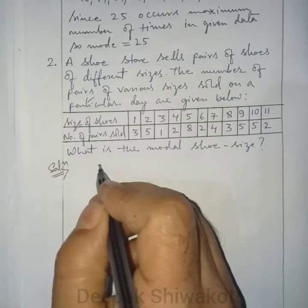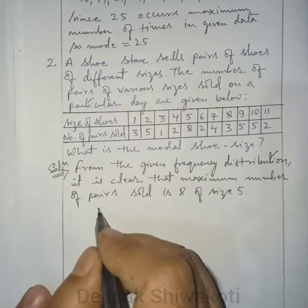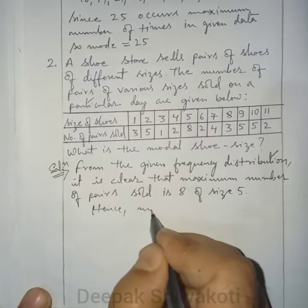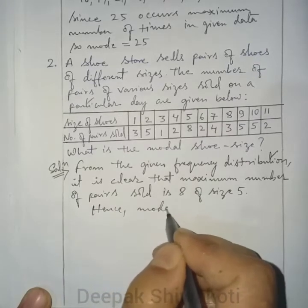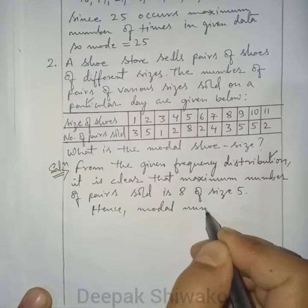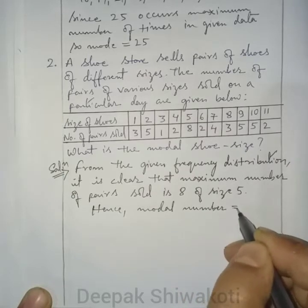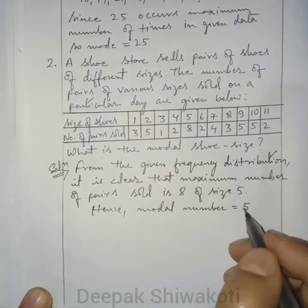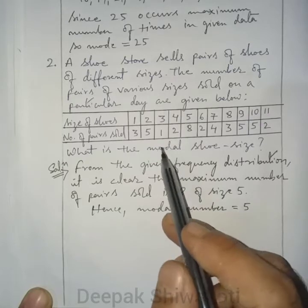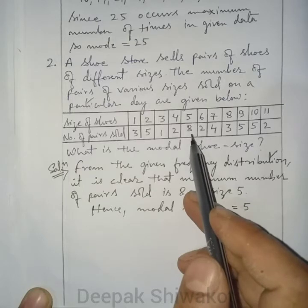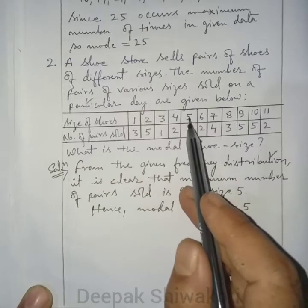Hence, the modal shoe size is 5. Size 5 shoes are sold the maximum number of times, which is why the mode is 5.